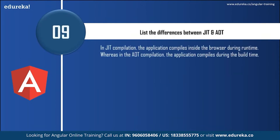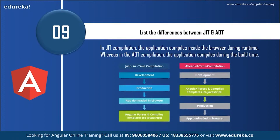The next question is: list the differences between JIT (Just-in-Time) compilation and AOT (Ahead-of-Time) compilation. In Just-in-Time compilation, the application compiles inside the browser during runtime. Whereas in AOT, Ahead-of-Time compilation, the application compiles during build time. Some of the differences are shown in the flowchart here — have a look at it.